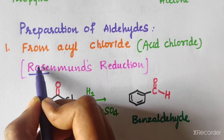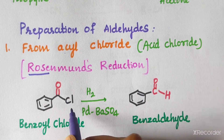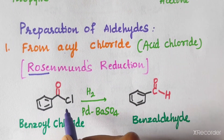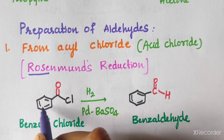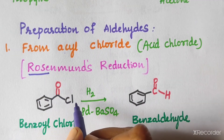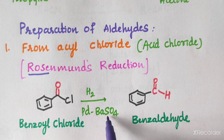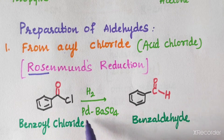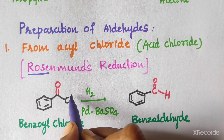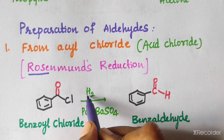In Rosenmund's reduction, the acyl chloride (RCOCl) — which has a C=O group and a Cl — is treated with H2 in the presence of palladium on BaSO4 (Pd/BaSO4) as catalyst. One Cl is replaced by one hydrogen.